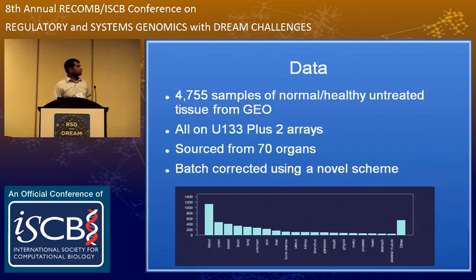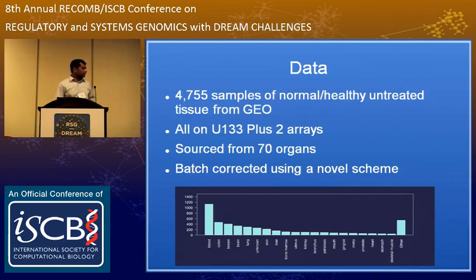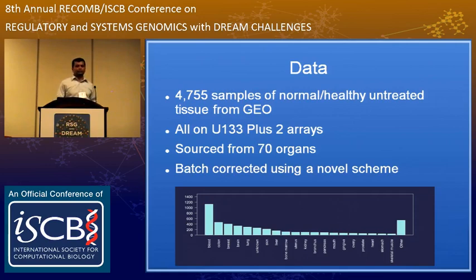What I did was take 4,700 samples of annotated normal, healthy, untreated samples from GEO, all on U133 Plus 2 arrays, sourced from 70 different organs. You can see the number of samples from each organ — blood is overrepresented because it is easy to get blood from people, which could cause a bias. But there is a wide variety of samples representing many different types of normal. I batch-corrected it using a novel scheme; with 4,000 samples, batch effects are another source of variation rather than a systematic bias.